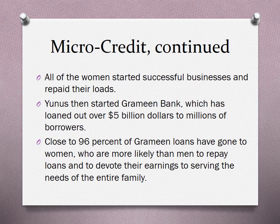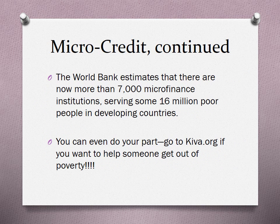That has also changed because women have been socializing their sons to take more responsibility. As such, you see a newer generation of men who are more committed to sticking around and being part of their family. The World Bank estimates that there are now more than 7,000 microfinance institutions serving some 16 million poor people in developing countries.